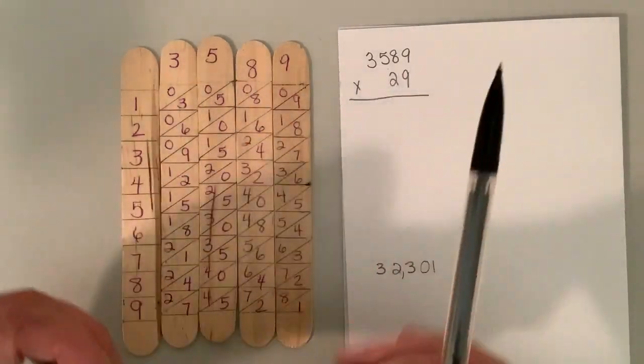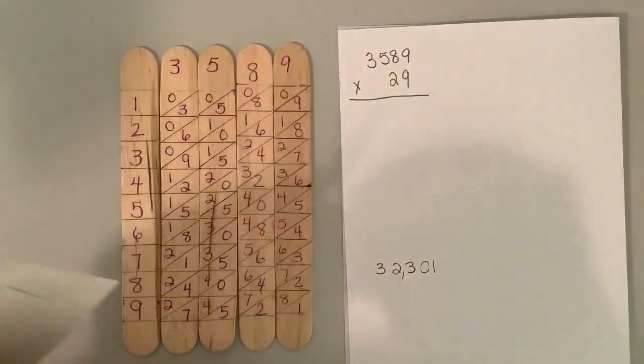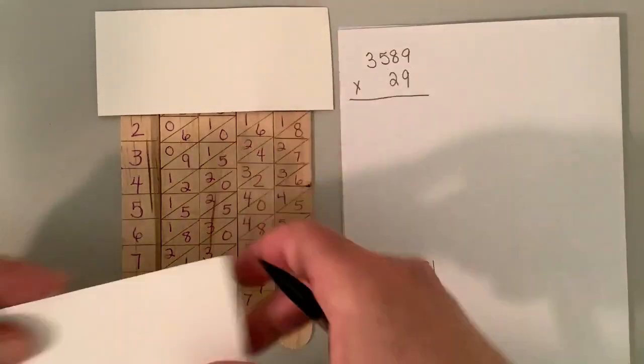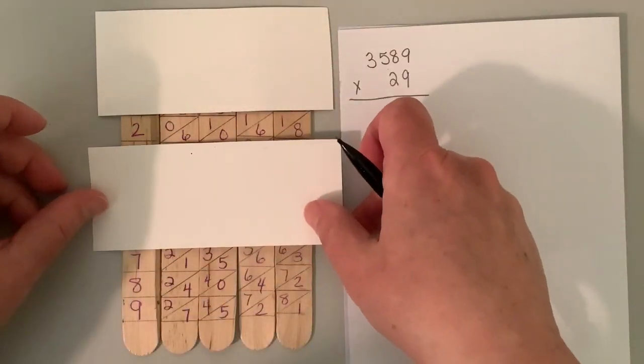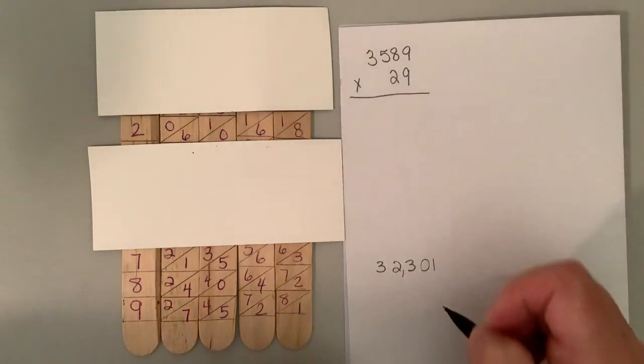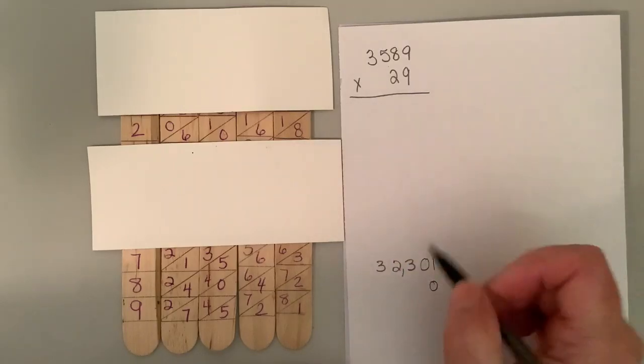Now the second one we're going to do is we're going to multiply it by 20. So I'm going to highlight my two line. Now, because we're multiplying it by 20, we know it's going to end in a zero. So we put that zero down and then we just go ahead and use the rods here.